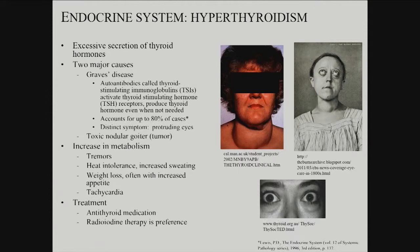That protruding eye symptom is not uncommon. You also get a constellation of increased metabolic activity: tremulousness, heat intolerance, elevated body temperature, increased sweating, weight loss, increased appetite, and tachycardia — high heart rate. There is a pronounced thermoregulatory effect of thyroid hormone.